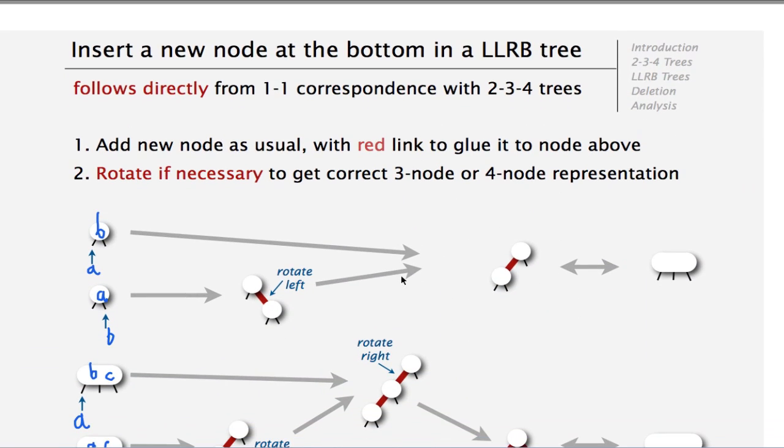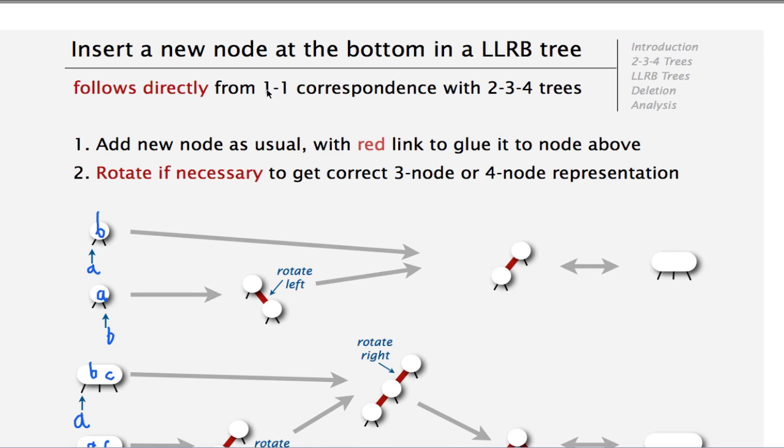So how do we insert a new node? We do it essentially very similar to the 2-3-4 trees. Basically, we go all the way to the bottom and then we add it to the node there. But here we have only a binary tree. So what we do is we add the new node at the bottom and connect it with a red link to the node above. So they are essentially the same node. Here is a B node, a node that has only two edges and we connect an A. So we get A connected here to B. And that's a legitimate representation.